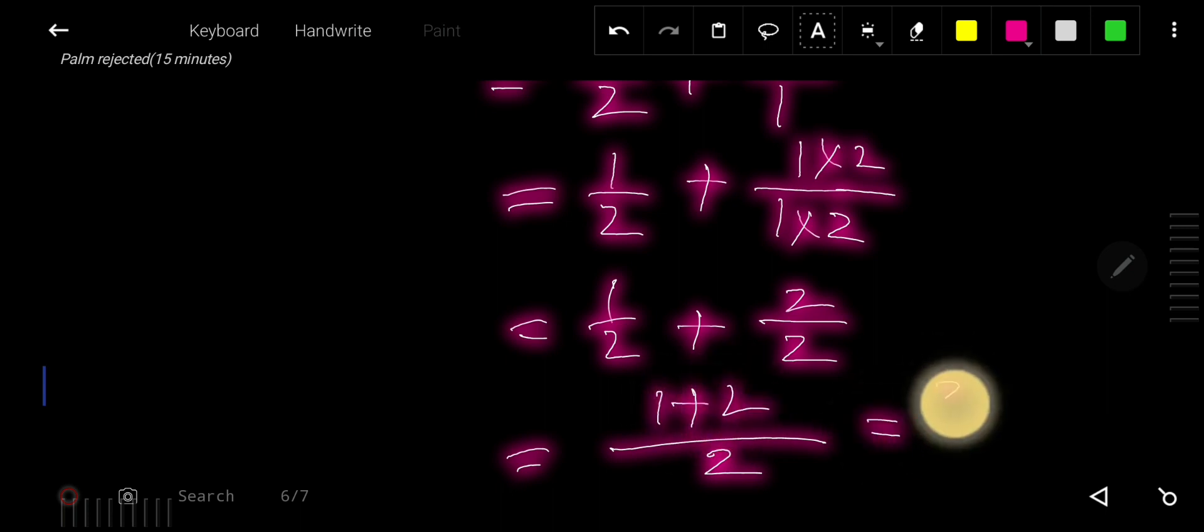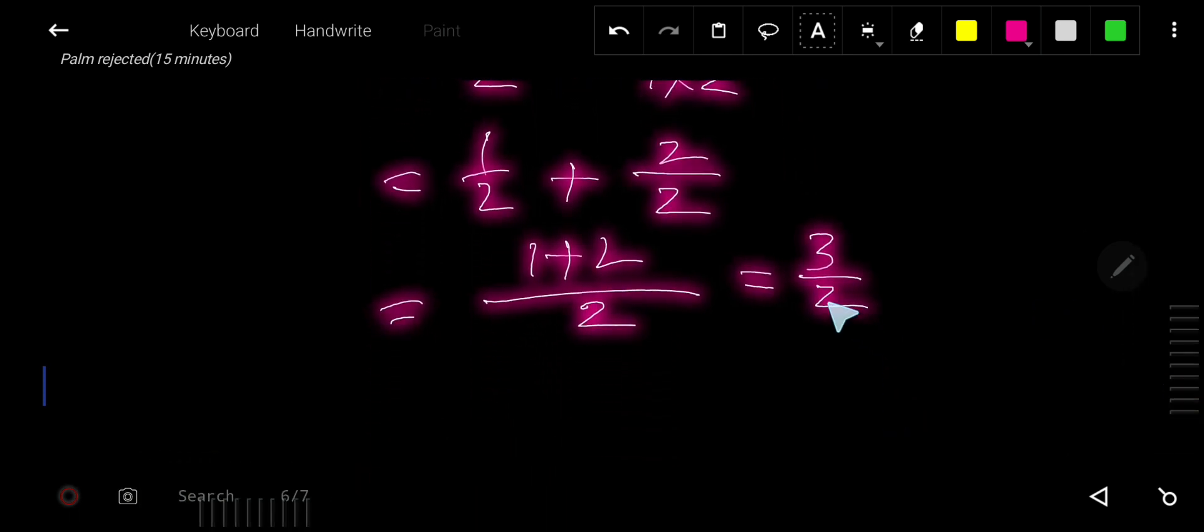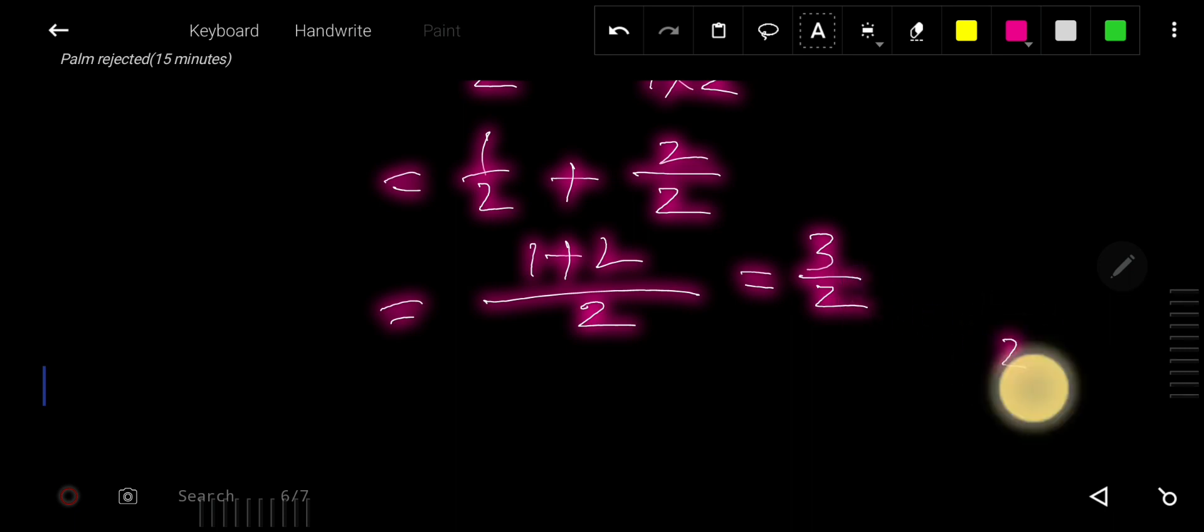So 3 over 2. But here you cannot finish your answer because this is an improper fraction. In improper fractions, the numerator is greater than the denominator, so you need to convert this improper fraction to a mixed fraction. How to do it? You need to divide the numerator by the denominator.